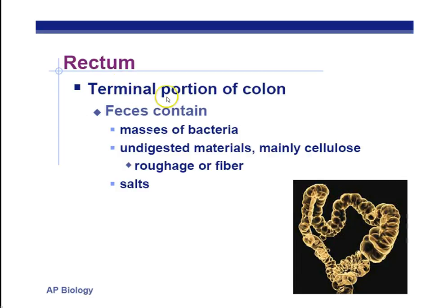The rectum is the last, or terminal, end of the colon — this is where the feces come out. How does that feces come out? That is the result of peristalsis — the rhythmic contraction of the smooth muscle — and that's going to happen from the esophagus all the way down to the rectum. Inside the feces are masses of bacteria — those bacteria in your large intestine are constantly being replaced and eliminated.